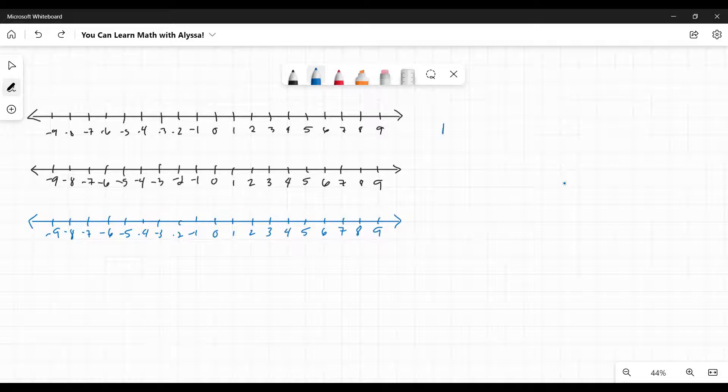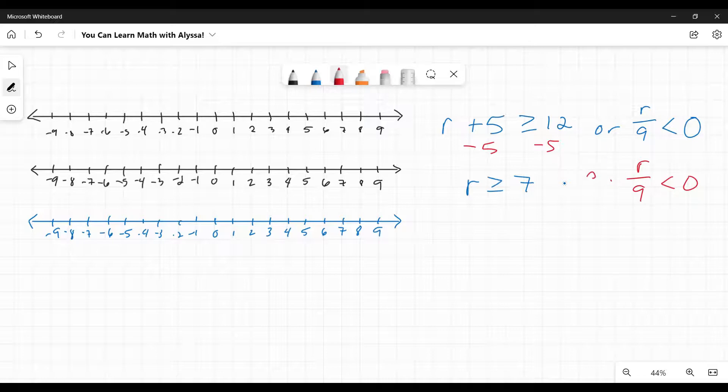Here's one I got from a student: r plus 5 is greater than or equal to 12, or r over 9 is less than 0. So now you're just going to do this as a standard solve for r, solving this inequality. For this one, the first side, to get r by itself, I subtract 5 from both sides, and I get r is greater than or equal to 7. On the other side, I have r divided by 9 is less than 0. I'm going to multiply by 9 on both sides, and so that way I get that r is less than 0.